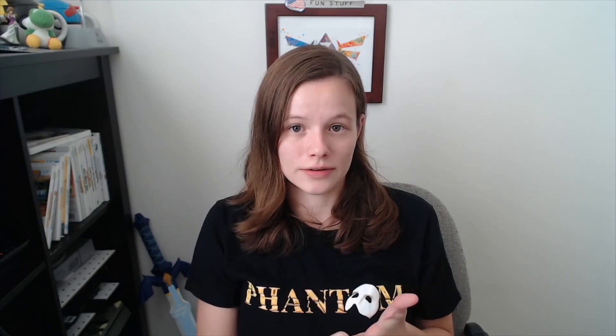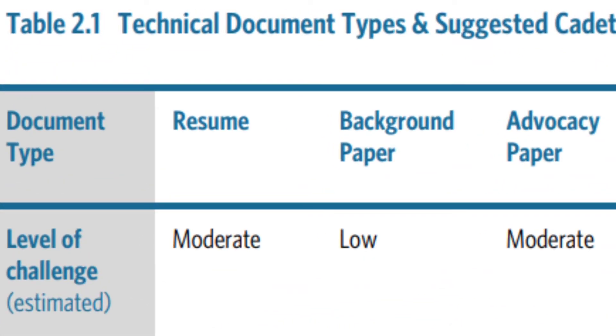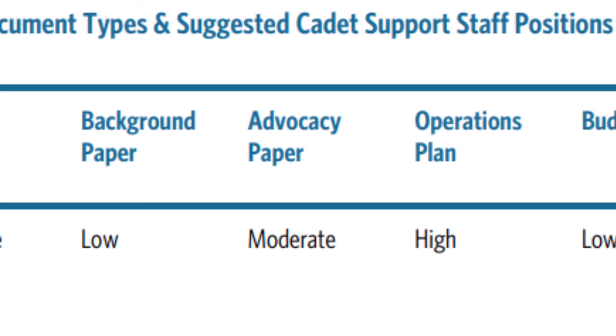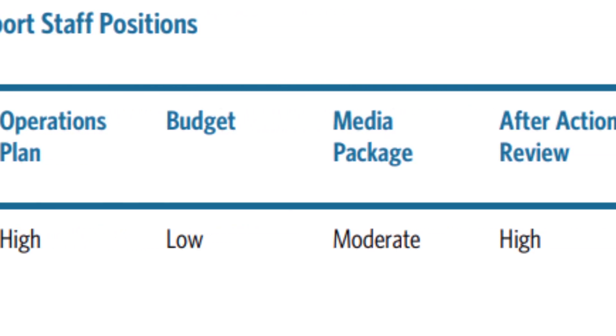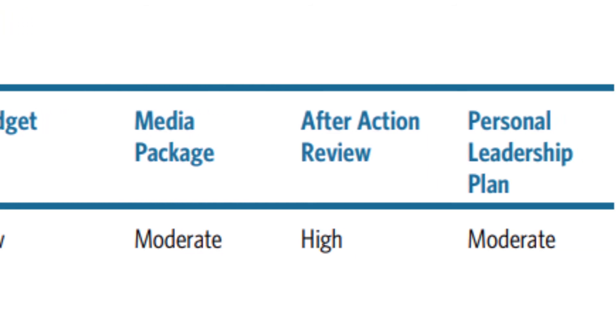Now let's talk about the different types of SDAs, how challenging they might be, and the suggested duty assignments associated with each one. The eight SDA document types are: the resume, background paper, advocacy paper, operations plan, budget, media package, after action review, and personal leadership plan.